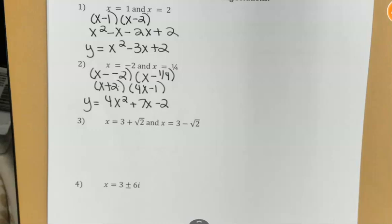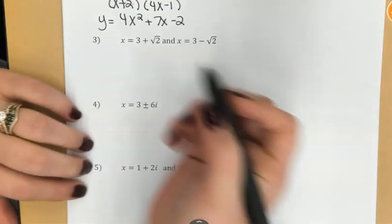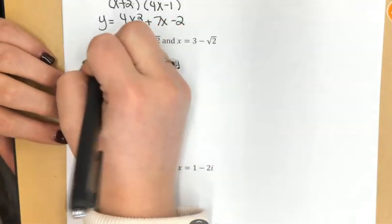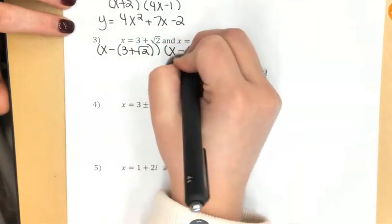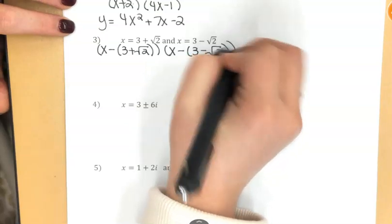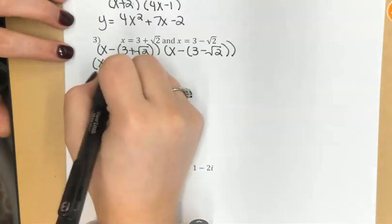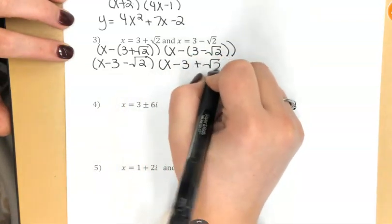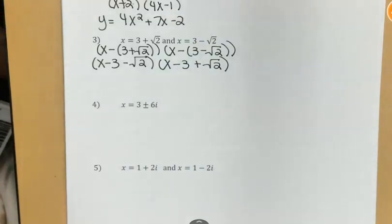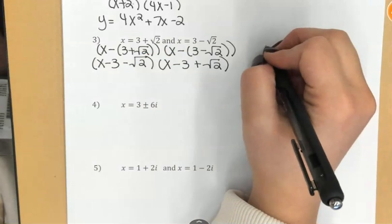Now, same thing is true when I have irrational solutions, something with non-perfect roots. So if these are my two solutions, what I'm going to have here is x minus 3 plus the square root of 2 and x minus 3 minus the square root of 2. Those parentheses are important because I need to distribute that minus sign. So I'm going to have x minus 3 minus the square root of 2 and x minus 3 plus the square root of 2. Now, as this is, this looks really ugly. This looks really messy.